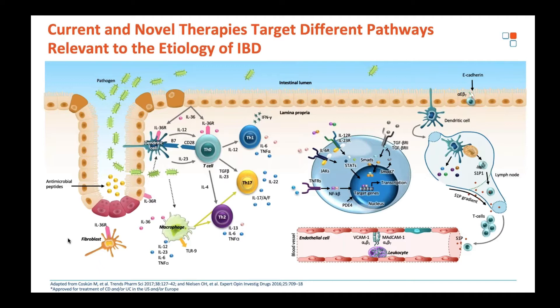Let's take stock of where we are and the pathways we'll be discussing. This is a complex diagram of the mucosal immune system. One of the first issues is a slightly leaky epithelium with a reduced barrier layer. You then get interaction between aspects of the microbiota and its antigenic load with the innate immune system — monocytes and macrophages.